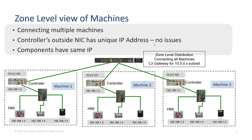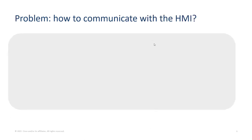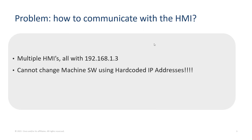This is where we start to see duplicate IP addresses when we have multiple machines. Every machine is essentially the same — they all have the same components, running the same software, and the software uses hard-coded IP addresses to identify the components. So in every machine, the HMI is going to have the same IP address. This is where duplicate IP addresses show up in industrialized networks, and why you need Layer 2 NAT. We're not going to change the software to stop using hard-coded IP addresses, so Layer 2 NAT on the IE switches comes into play.